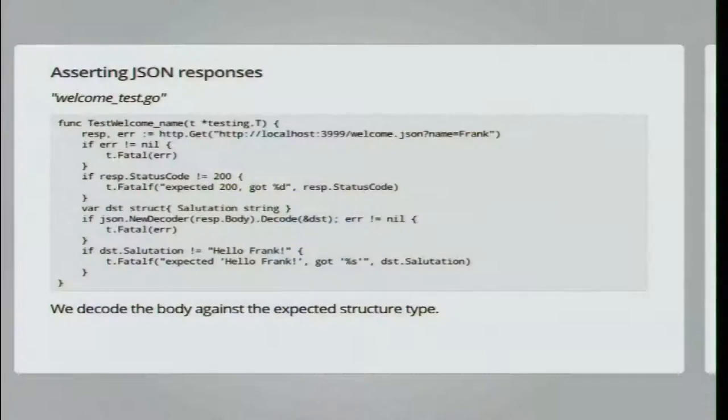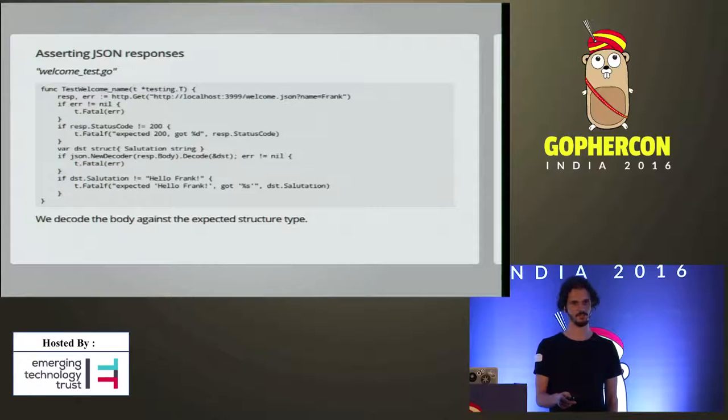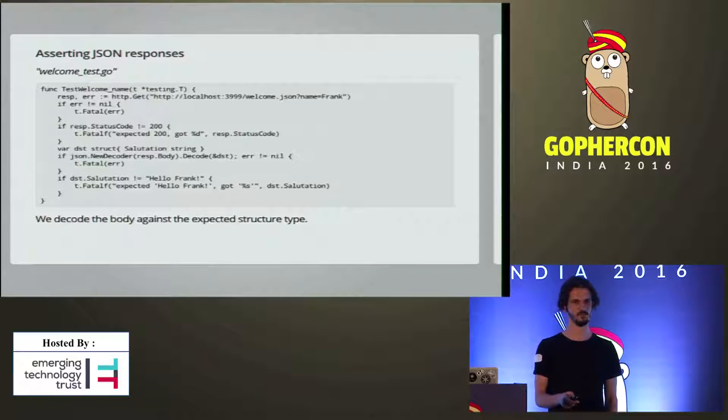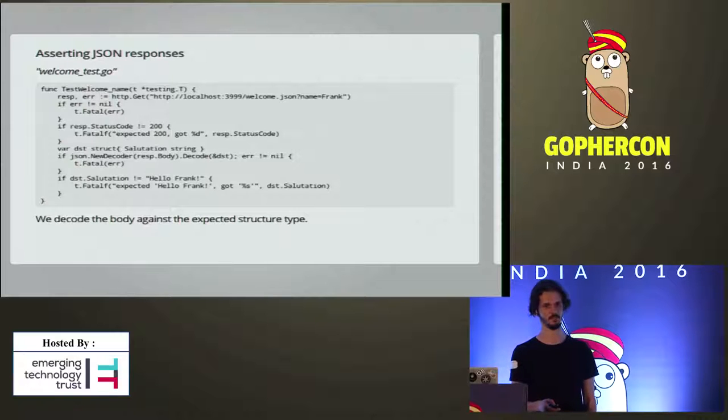Another similar version would be a page called welcome.json that returns a salutation in JSON form. Whenever we hit this page with the query parameter Frank, it returns salutation hello Frank. We do a GET request to the URL, create a new structure that has the expected form, decode the response body into that structure, and check that the salutation is as we expect.